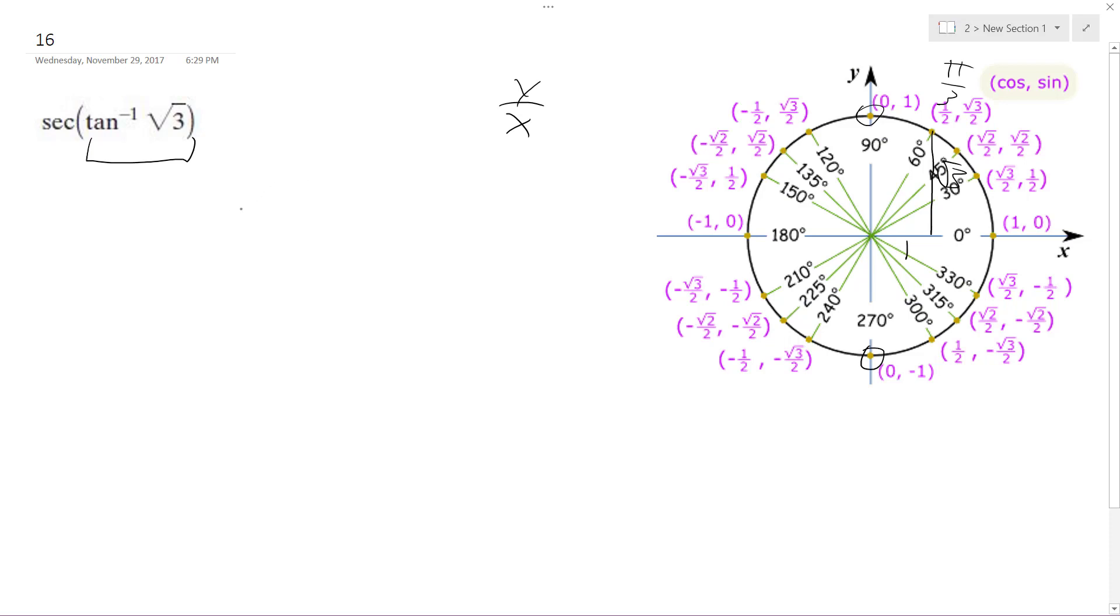And this ends up being secant of pi over 3, because it's like we're doing the trig function reverse there. Alright, so secant of pi over 3, that's the same thing as 1 over cosine pi over 3 in a way, to kind of help you see this.